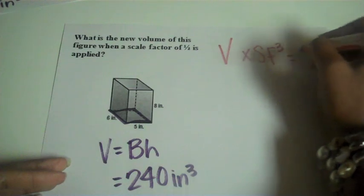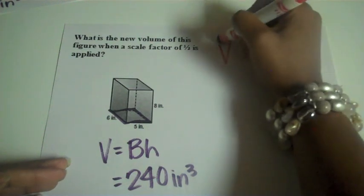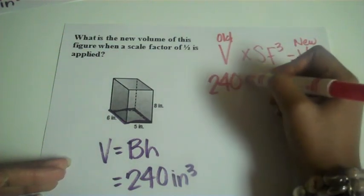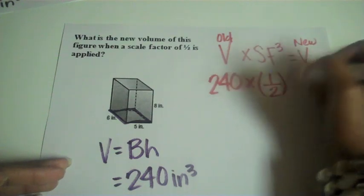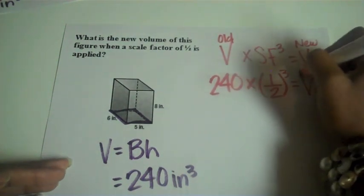But we do have to go ahead and apply that different scale factor, a scale factor this time of 1 half. Okay, so our old volume here is 240. Our scale factor here is 1 half. And since we're talking about volume, we'll have to do scale factor cubed to get that new volume.